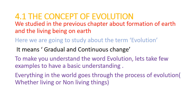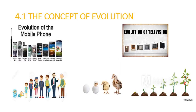We studied in the previous chapter about the formation of earth and the living beings on earth. Here we are going to study the term evolution. It means gradual and continuous change — gradual means slow, and continuous means non-stop. To make you understand the word evolution, let us take a few examples to have a basic understanding. Everything in the world goes through the process of evolution, whether it is a living or non-living thing.